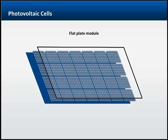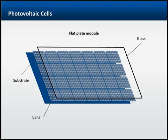The most common type of module is the flat plate, where multiple cells are encased in clear materials, often made of polymer, placed onto a substrate of metal, glass, or plastic, and covered with transparent plastic or glass, all of which is placed within a structural frame.